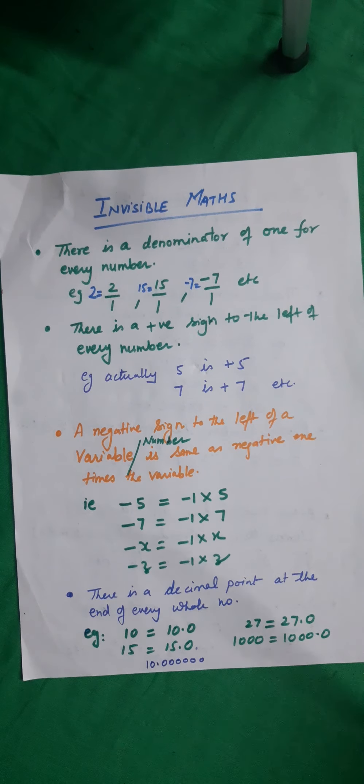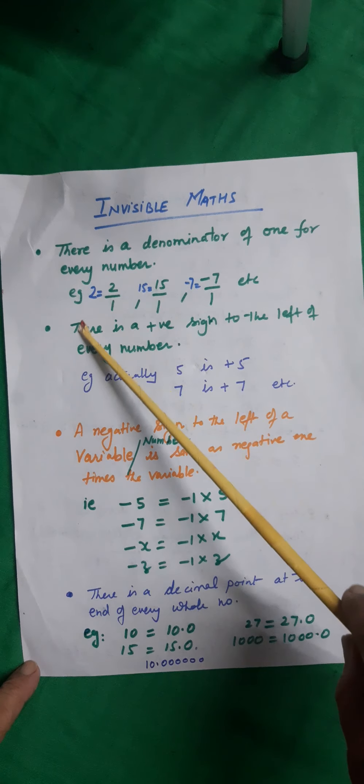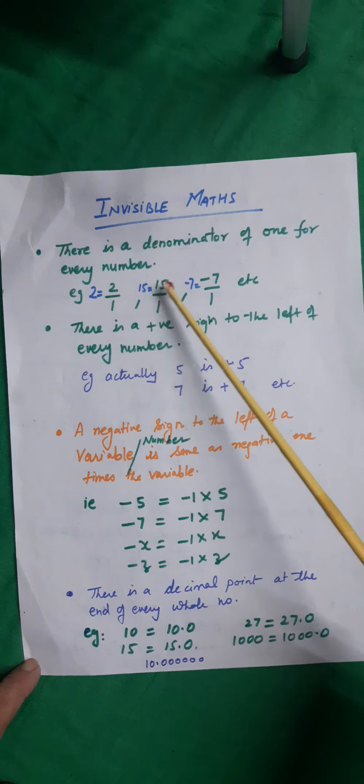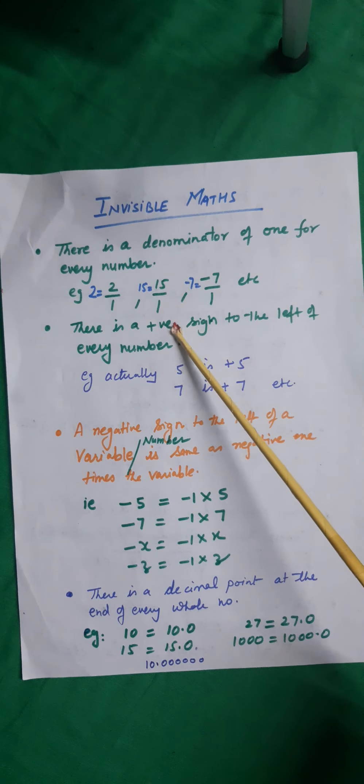There is a denominator of 1 for every number. Example: 2 can always be written as 2 upon 1. 15 can be written as 15 upon 1.